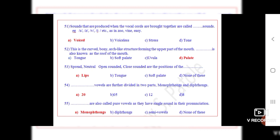Question 52: This is the curved bony arch-like structure forming the upper part of the mouth, dot dot, also known as the roof of the mouth. The correct option is D, palate.